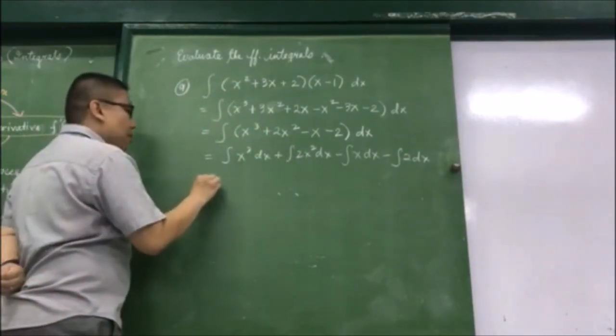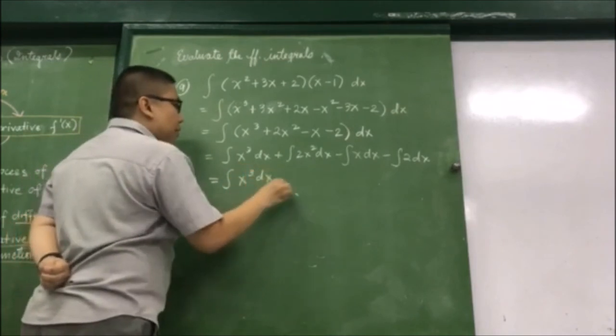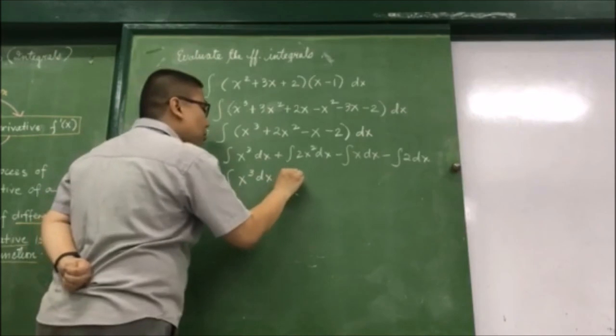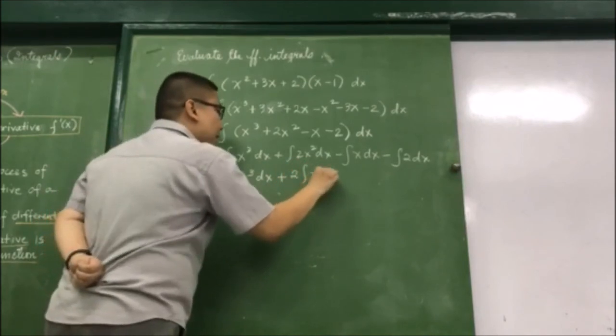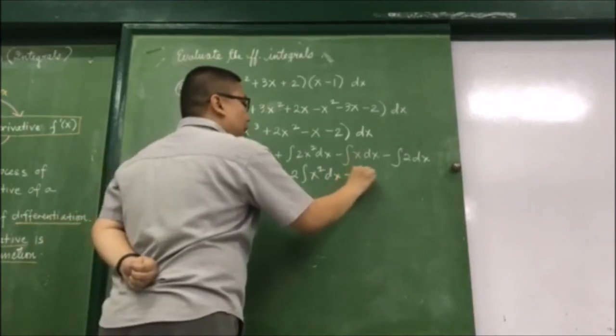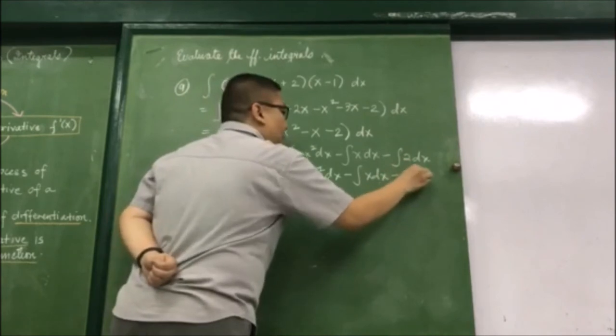So this becomes the integral of x cubed dx, then we have plus 2 times the integral of x squared dx, and then minus the integral of x dx, and then minus 2 times the integral of 1 dx.